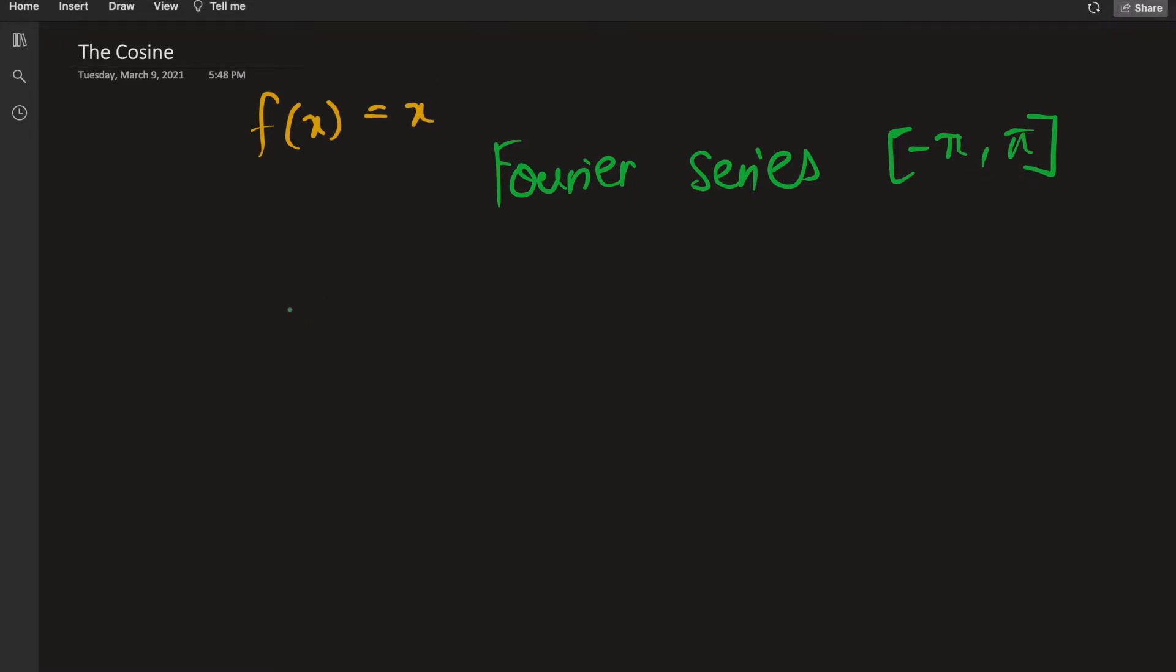Let me just state the formula for the Fourier series. The Fourier series is as follows: f(x) is equal to a₀ over 2 plus the sum from n equals 1 to infinity of aₙ cosine of nx plus bₙ times sine of nx.